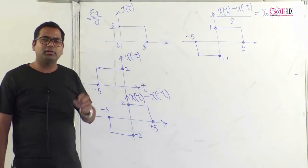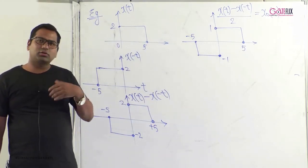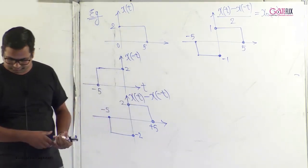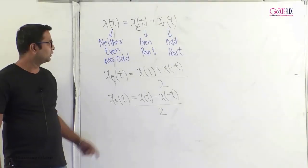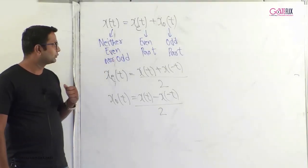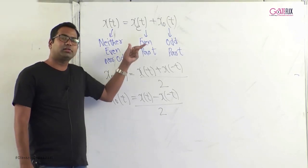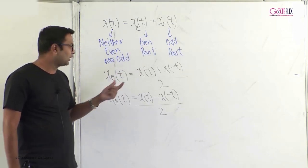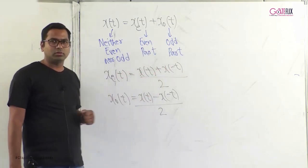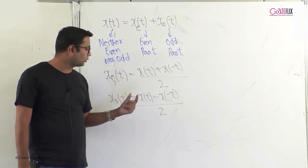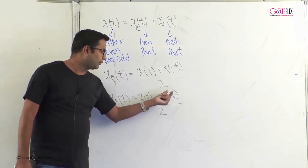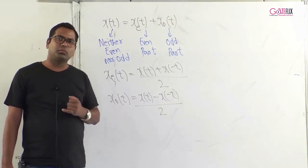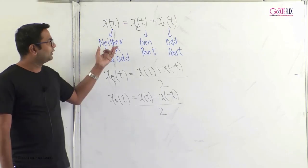In exams, you may be given a signal that is neither even nor odd and asked to find its even or odd part. To summarize: a signal which is neither even nor odd can be divided into an even part x_even(t) = [x(t) + x(−t)] / 2 and an odd part x_odd(t) = [x(t) − x(−t)] / 2.